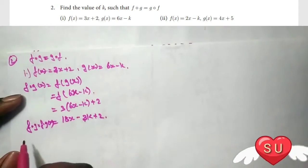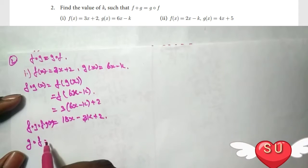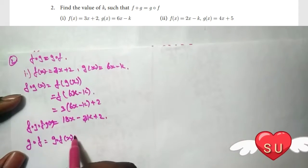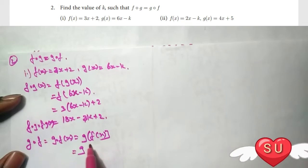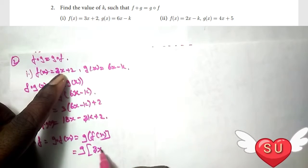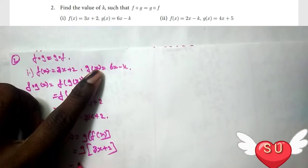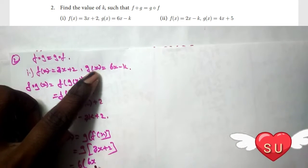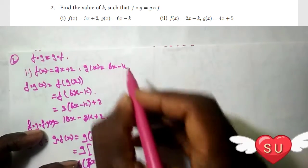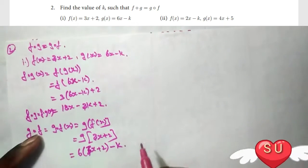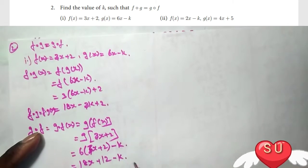Okay. Next, now we are going to find g∘f. g of f of x. So, g of f of x — f of x is 3x plus 2. So, g of x: we substitute the x value with 3x plus 2, giving 6 times (3x plus 2) minus k, which equals 18x plus 12 minus k.